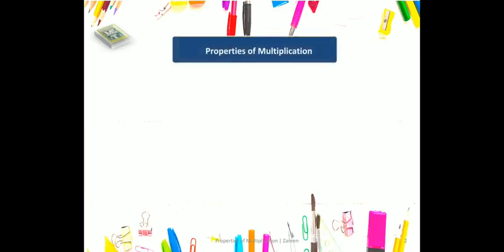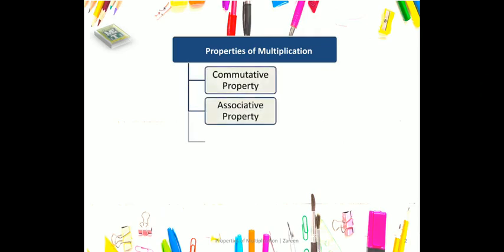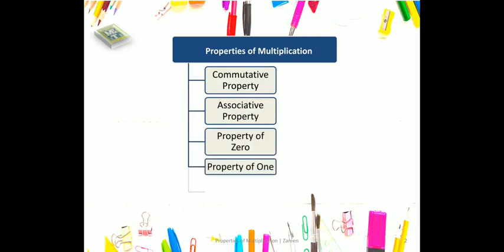Dear students, properties of multiplication include commutative property, associative property, property of 0, property of 1, and the distributive property. Let us discuss about all the properties of multiplication in detail.